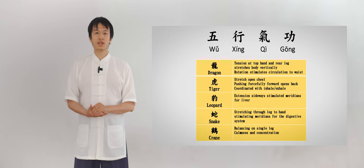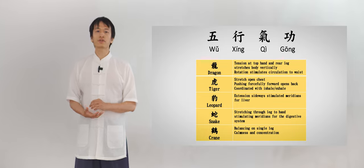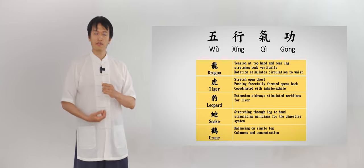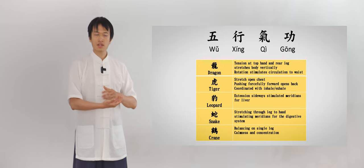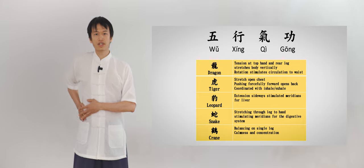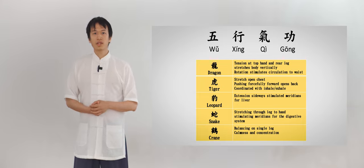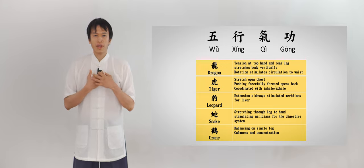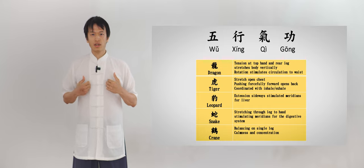So if we look at the requirement of the movements of each animal, we can understand how the exercises work. In each animal, the movements are coordinated with breathing. This is the key of the qigong. For the dragon, the requirement is on the tension. The tension going up and down on the pushing hand and the standing leg will stretch the body vertically. At the same time, the rotation sideways stimulates circulation to the waist area and the kidney. The tiger focuses on stretching the chest in the backward and forward movements. When pushing forward, it will stretch the back. And when stretching backwards, it will open the chest. This is to activate and stimulate the lungs.